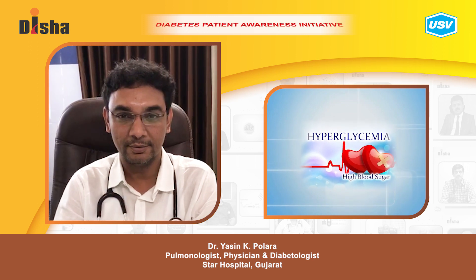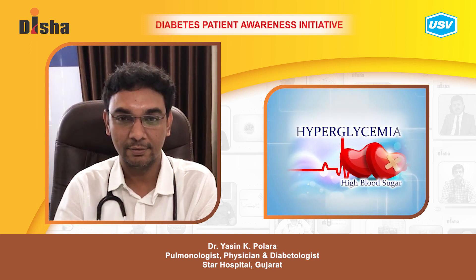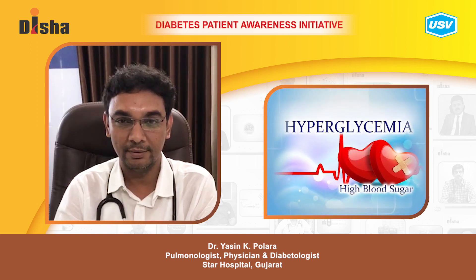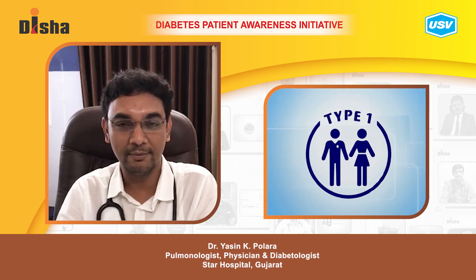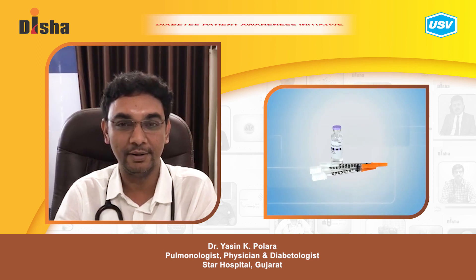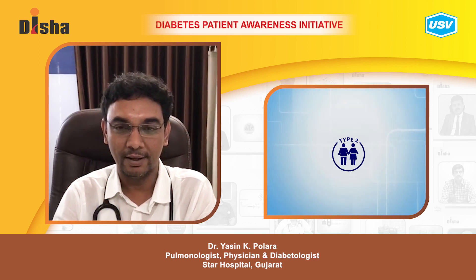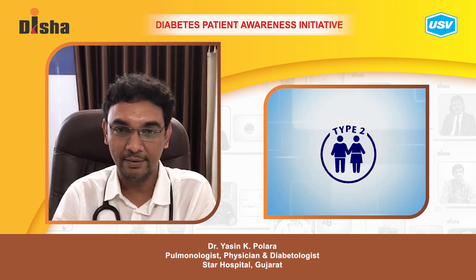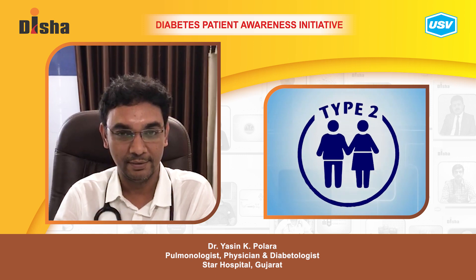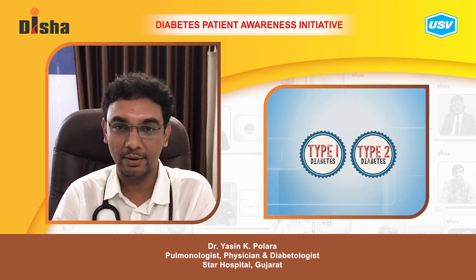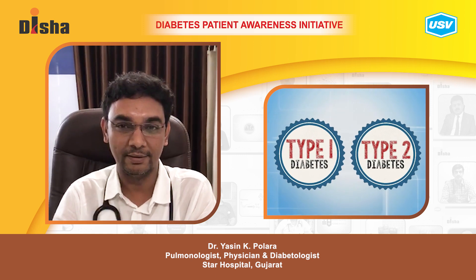There are two common types of diabetes. Type 1 diabetes is insulin-dependent diabetes, and type 2 diabetes is non-insulin-dependent diabetes. Both of these are chronic conditions.